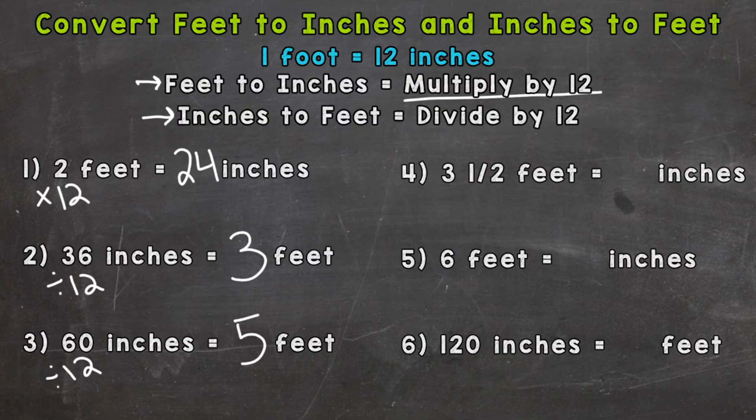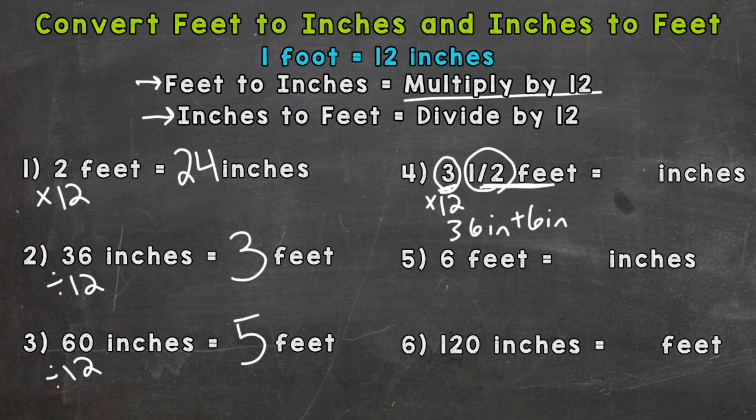Number four we have something a little different. Three and a half feet equals how many inches. So let's think how many inches is 3 feet? Well we need to do 3 times 12. Three groups of 12. That gives us 36 inches. But that's not going to be our answer. We need the half of a foot here. And a half of a foot, well 12 inches is one whole foot. So what's half of that? A half a foot is six inches. So we need to combine the three, the whole three here, and a half. So 36 plus six gives us a total of 42 inches. So whenever you see a half of a foot that's six inches.